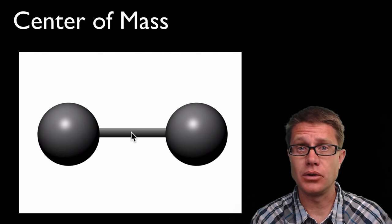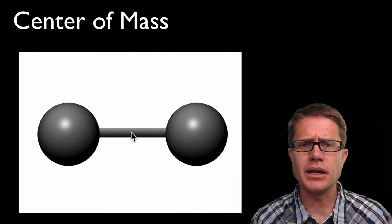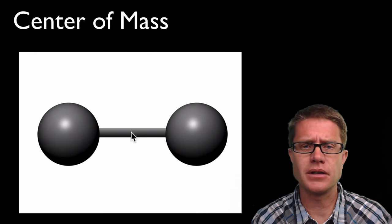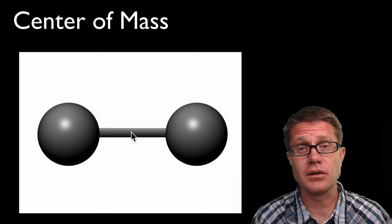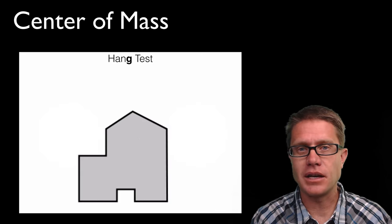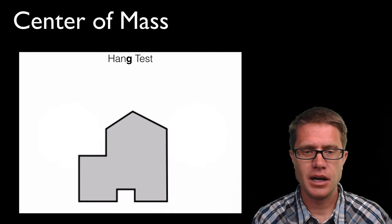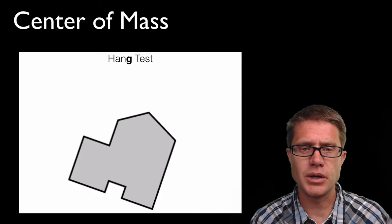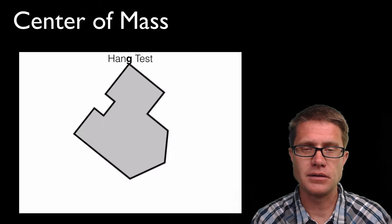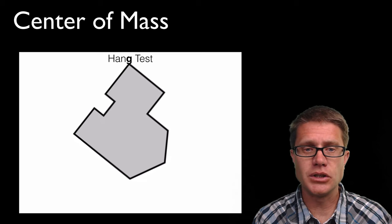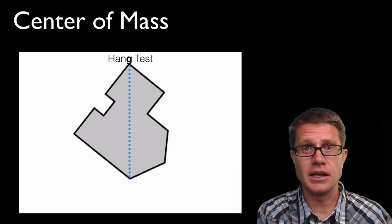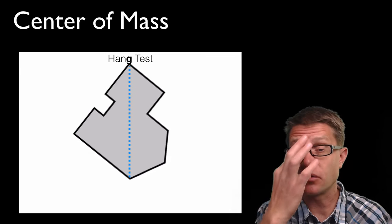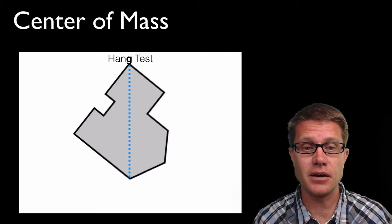But let us say we have an irregular object. How do we figure out where the center of mass is if we do not have a formula to figure it out? Well, there is a hang test that works real well. Let us say we have got a piece of metal, it is cut like a house like this. What we could do is we could hang it like that, so we hang it vertically. Then we just draw a dotted line that shows us where verticality is. You could just drop a piece of string and then just kind of trace along there.